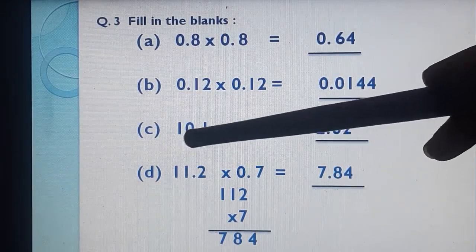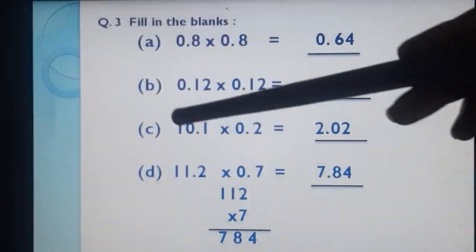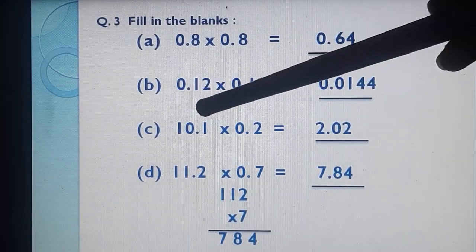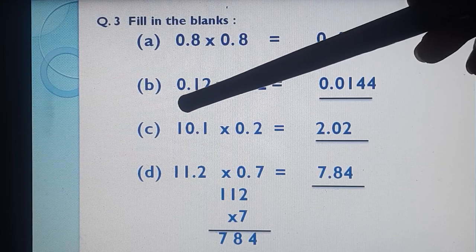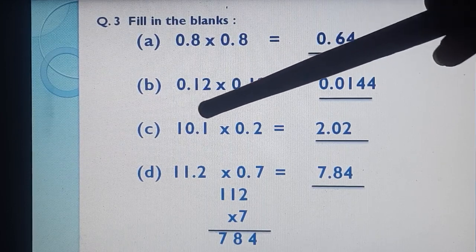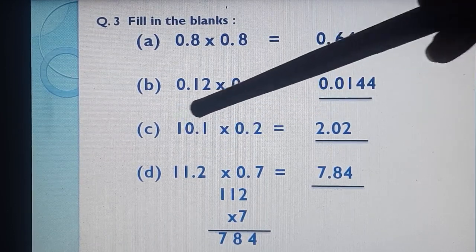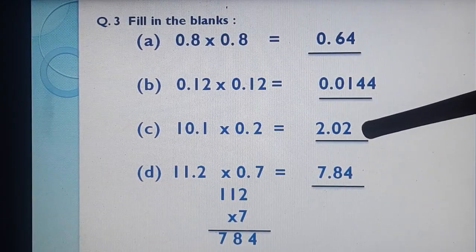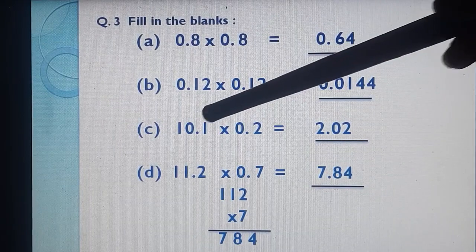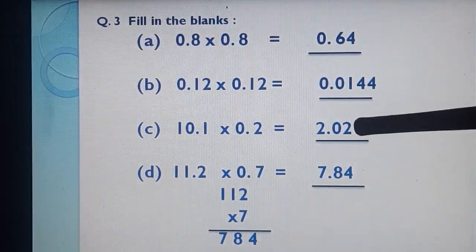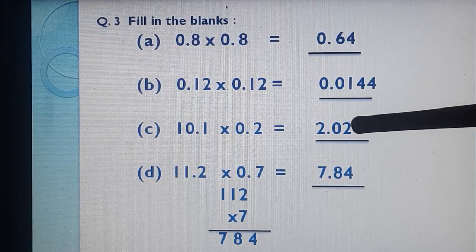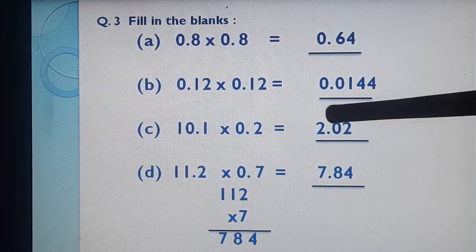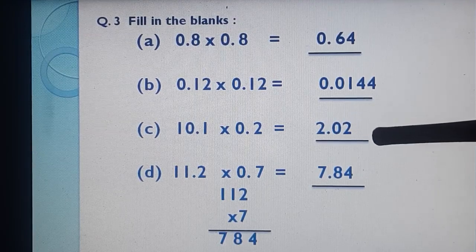Part C: 10.1 × 0.2. Removing decimals: 101 × 2 = 202. After decimal: 1 and 2 digits total. Start counting from last place — 1 and 2 — then put decimal. Our answer is 2.02.